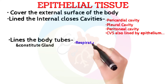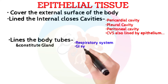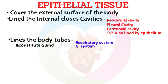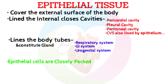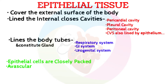In body tubes, epithelium lines the respiratory system, gastrointestinal system, and urogenital system. Epithelium cells are closely packed cells and they are avascular, meaning there is no vascular tissue present between these cells.